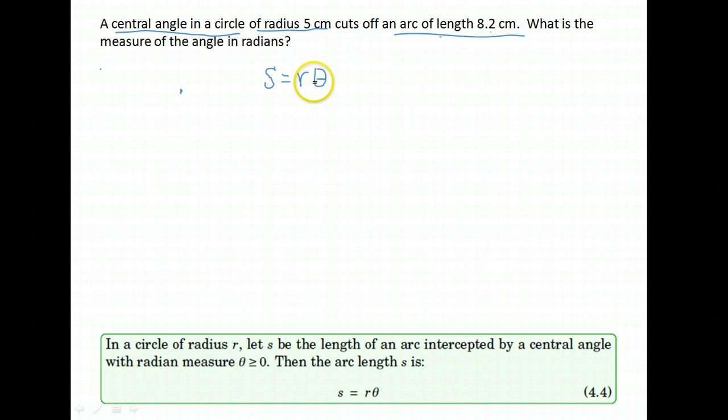Let's look at what we have and what we want. We want the measure of the angle in radians. So we don't know what theta is right now. Do we know the other parts? We do.